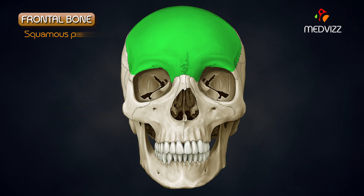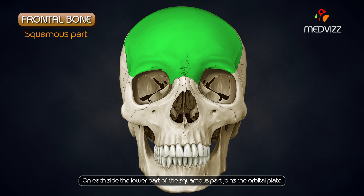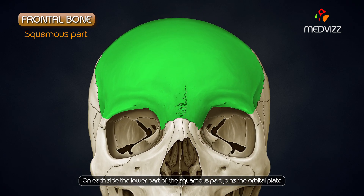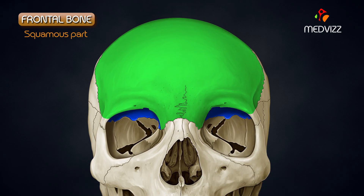Squamous part. On each side, the lower part of the squamous part joins the orbital plate. The junction of these two forms the supraorbital margin.